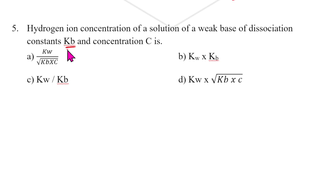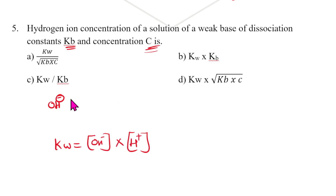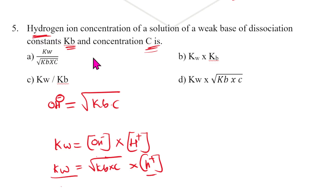Hydrogen ion concentration of a weak base solution with dissociation constant Kb and concentration c: using the relationship, OH⁻ concentration = √(Kb × c). Then H⁺ = Kw / OH⁻, so H⁺ = Kw / √(Kb × c). The answer for this question is A.